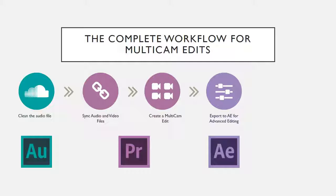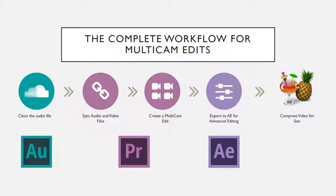You can skip the After Effects step if it's not needed for your project. When you export the project, the resulting file might be too big to upload — somewhere in the range of five or six gigabytes. So I'm going to show you how to work with a video compression software called Handbrake. Once you've compressed your video, you can upload it to Vimeo or YouTube, and I'll share the settings I use so there's not a lot of quality loss on upload.